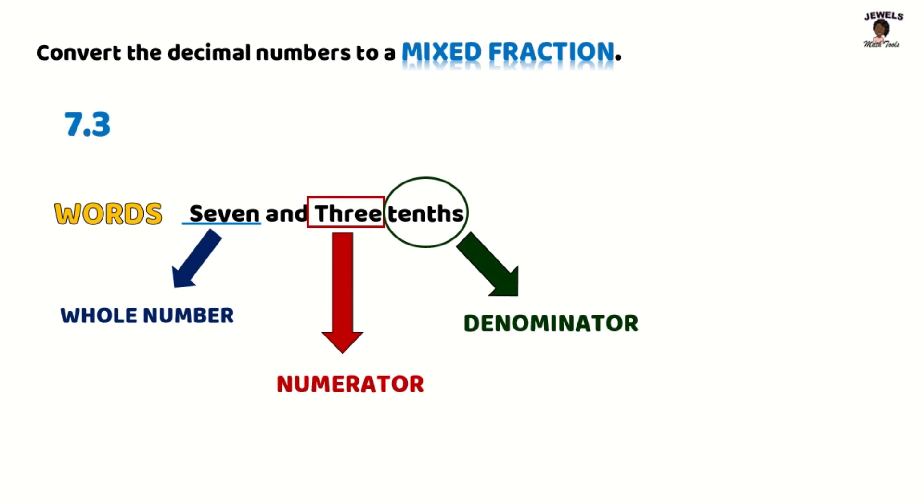So now let's fill in the different parts of this fraction. So we'll have 7, 3 for my numerator and my 10 for my denominator. So my mixed fraction will be 7 and 3 tenths.